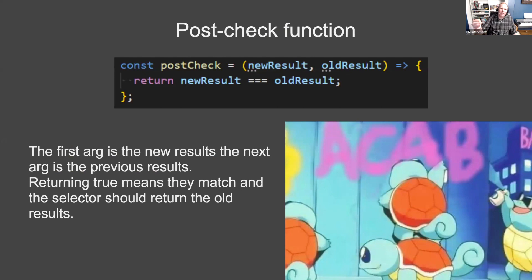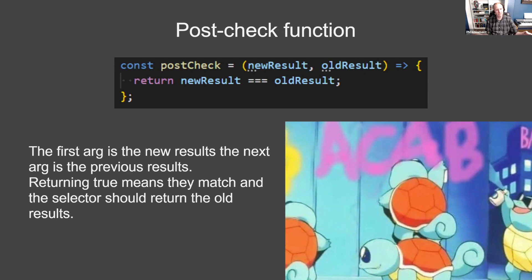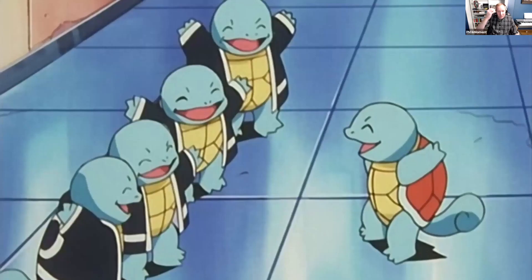The post-check is a little different because the projector function always runs. So the function runs and now you have a result — is that result different from the old result? A case for this is if you have a selector returning a list of things, like filtering down an entity into a few selected entities. That list, every time it's returned even if the values are the same, is a separate list — which means you'll trigger change detection. To avoid that, you can use the post-check and maybe check the IDs of the values in the list. If you return true it returns the old result; if you return false it returns the new result, so you can control your change detection.